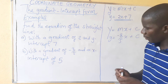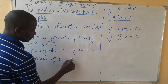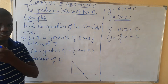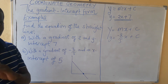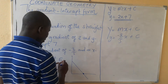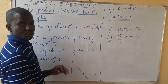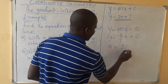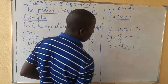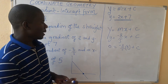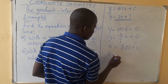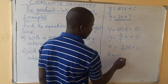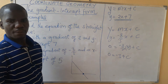The x-intercept is 5. At the point where the line cuts the x-axis, y equals 0. So we substitute y = 0 and x = 5 into the equation: 0 = -3/5 × 5 + c. That gives us 0 = -3 + c.